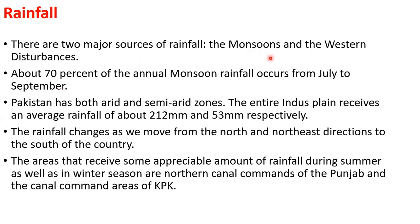Monsoon and western disturbance: when the weather is warm from the western side of the country — where there are deserts, especially in the Balochistan area — it causes rainfall. Along with different kinds of upheavals like cyclones, natural catastrophes also happen. These are the main sources of the rain system of the country. About 70% of the annual monsoon rainfall occurs from July to September.